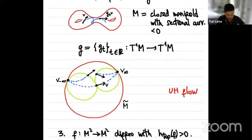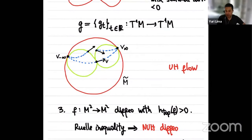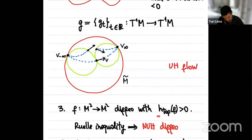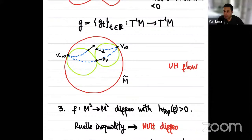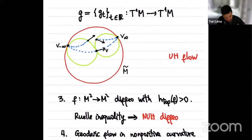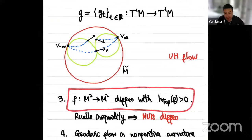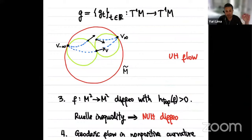What are the simplest examples in the non-uniformly hyperbolic context? The simplest one is in dimension two. If you are in dimension two and have positive topological entropy, there is an inequality called the Ruelle inequality which, in this low-dimensional context, implies that for many measures the system is non-uniformly hyperbolic. The simplest example of non-uniform hyperbolicity is surface diffeomorphisms with positive topological entropy.